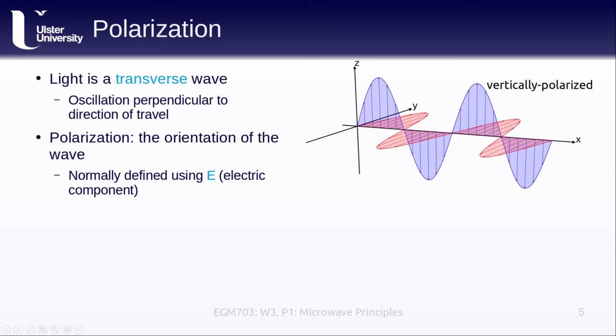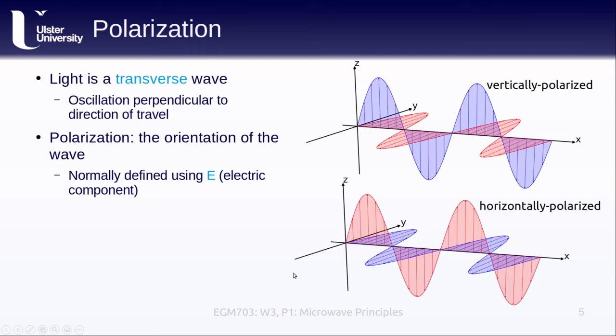So in this top example, the wave is vertically polarized. The electric field is oriented along the x-axis in the x-z plane. In the second example, the electric field is still propagating along the x-axis, but it is oscillating in the x-y plane. We would say that this is horizontally polarized.